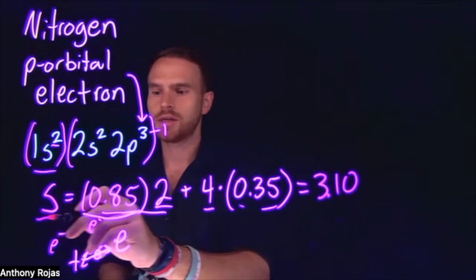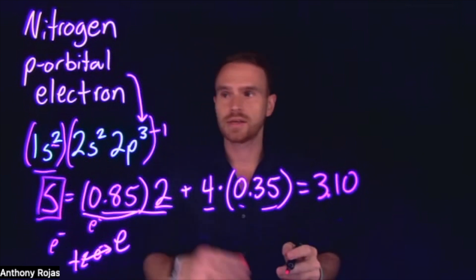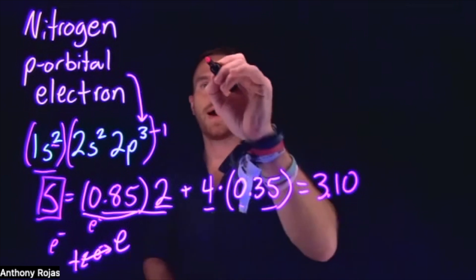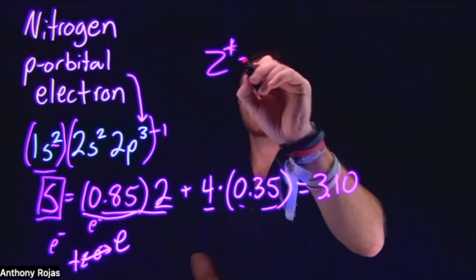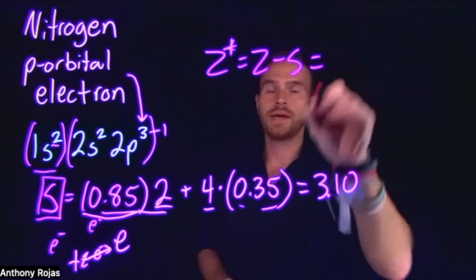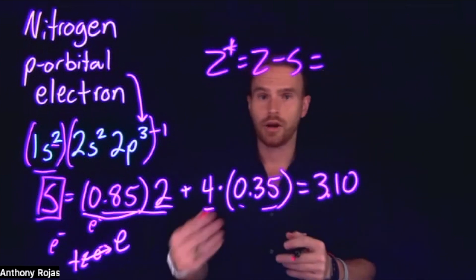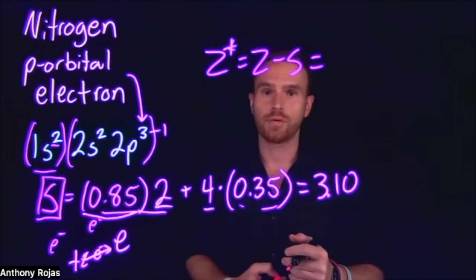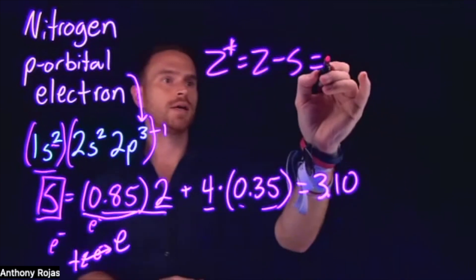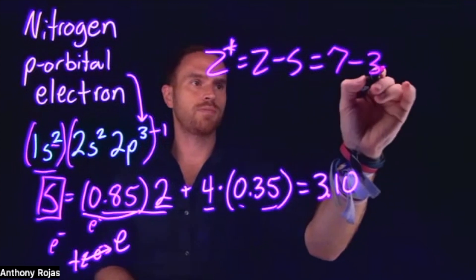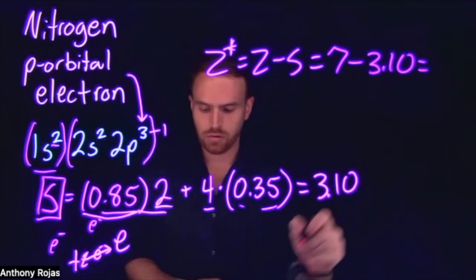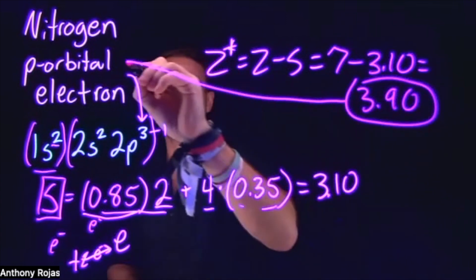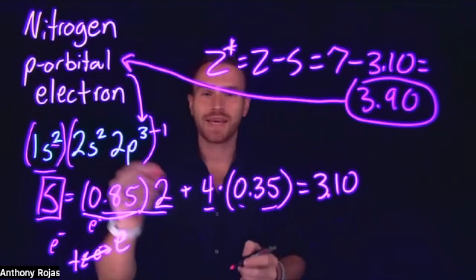That S value of 3.10 tells us the shielding impact from all electrons in nitrogen other than the single p-orbital electron we're interested in. Now we calculate the effective nuclear charge as Z minus S. Nitrogen is the seventh element on the periodic table, so Z equals 7. Therefore, 7 minus 3.10 equals 3.90. That is the effective nuclear charge for a p-orbital electron in nitrogen.